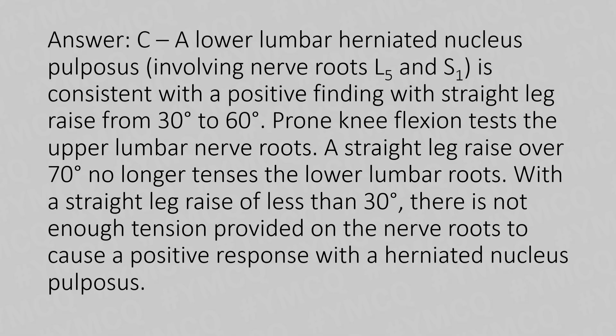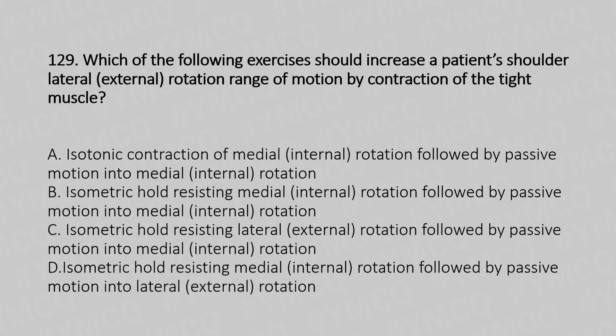Now let's move to question number 129. Which of the following exercises should increase the patient's shoulder lateral rotation, using contract-relax by contraction of the tight muscle? Option A: isotonic contraction of medial rotation followed by passive motion into medial rotation. Option B: isometric hold-relax medial rotation followed by passive movement into medial rotation. Option C: isometric hold-relax lateral rotation followed by passive motion into medial rotation. Option D: isometric hold-relax medial rotation followed by passive motion into lateral movement.